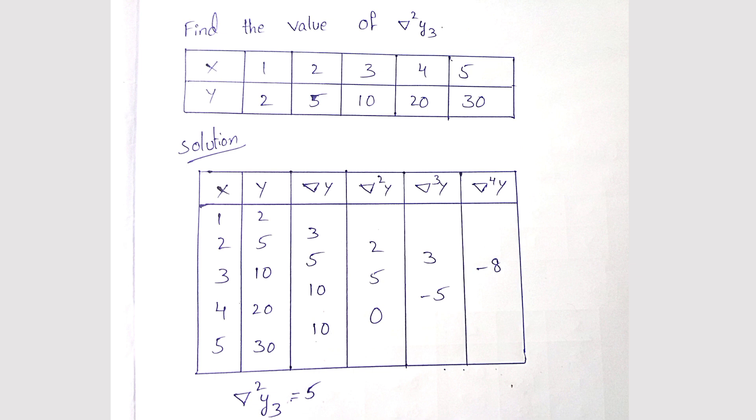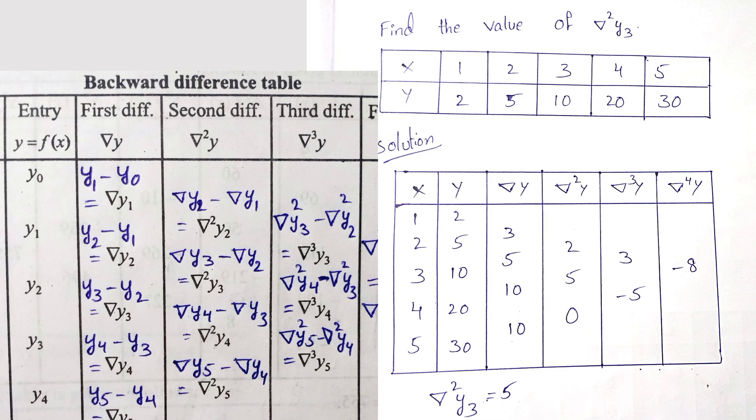X values 1, 2, 3, 4, 5. Y values 2, 5, 10, 20, 30. Next, draw the nabla y column. Nabla y, nabla square y, nabla cube y, nabla power 4y. Next nabla y values, first nabla y1.